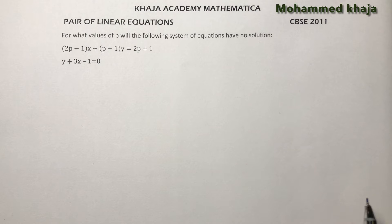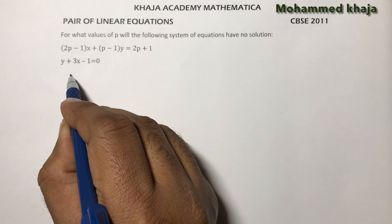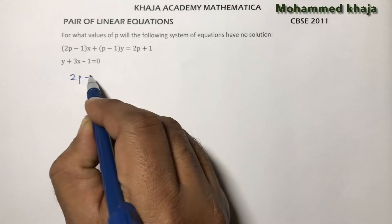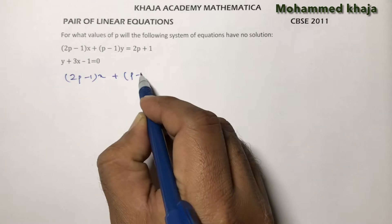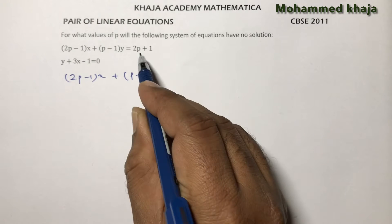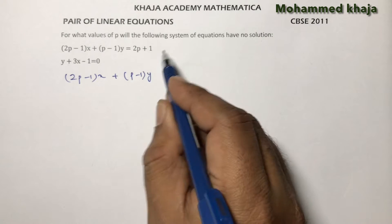For what values of p will the following system of equations have no solution? The first equation is (2p - 1)x + (p - 1)y equals... you can write the constant on the other side or bring it to the left side, so 2p + 1.